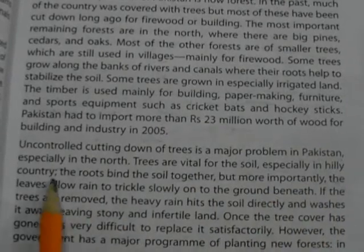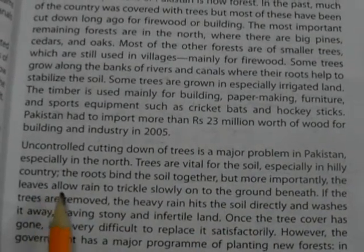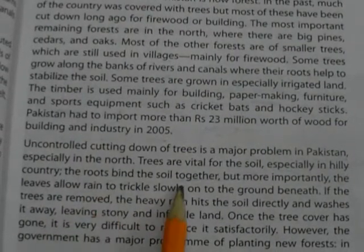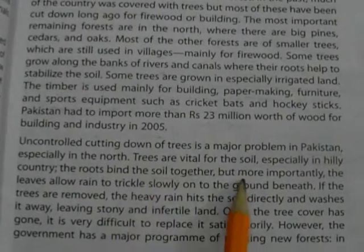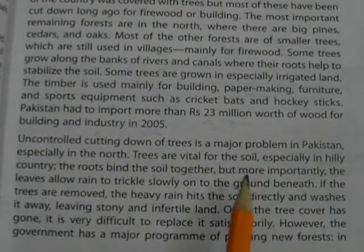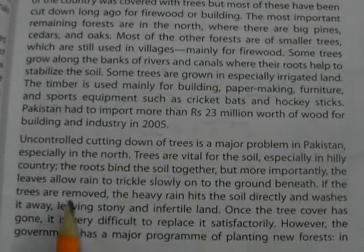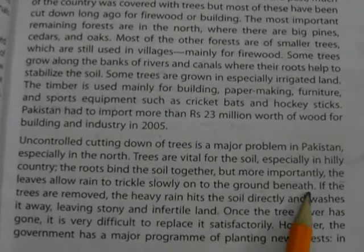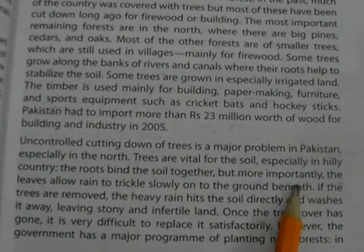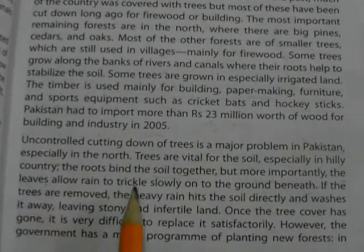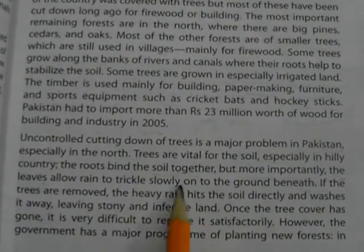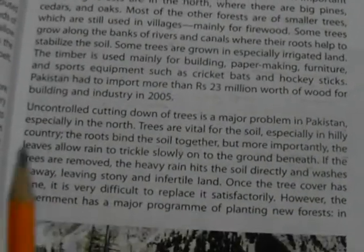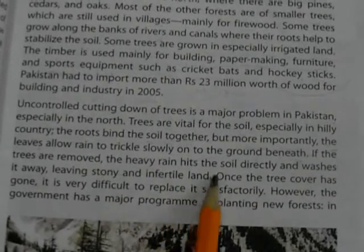The trees are vital for the soil, especially in the hills. The roots bind the soil together. More importantly, the leaves allow rain to trickle slowly onto the ground beneath. If the trees are destroyed, rain hits the soil directly.